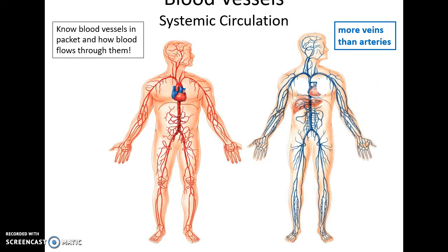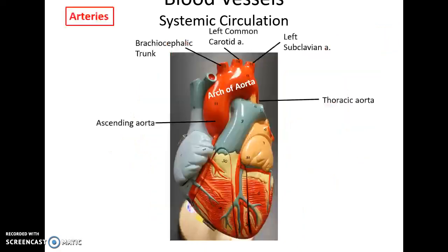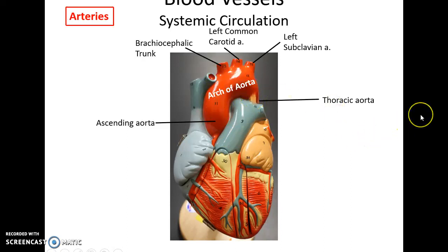Systemic circulation carries blood throughout the entire body — arteries carry it out to the body and veins bring it back to the heart; there are more veins than arteries. Coming off the heart is the ascending aorta, which becomes the arch of the aorta, then the thoracic aorta carrying blood to lower parts of the body. The arch of the aorta also has three arteries branching off: the brachiocephalic trunk, the left common carotid artery, and the left subclavian artery.